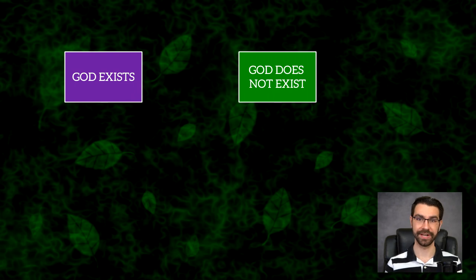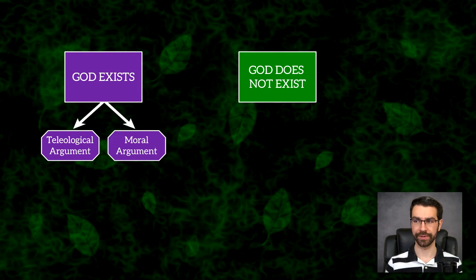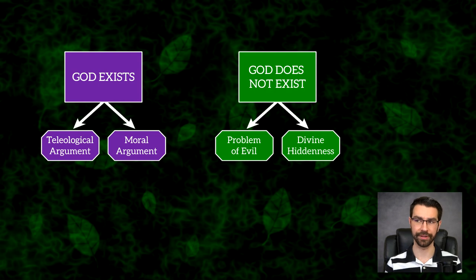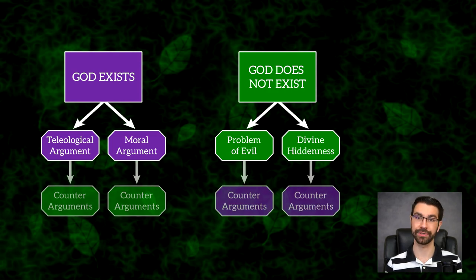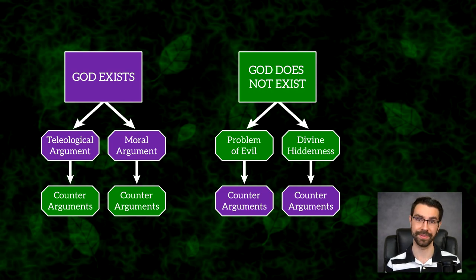As far as the arguments go, this binary distinction makes perfect sense. Arguments for the proposition that God exists might include the teleological argument and the moral argument, whereas arguments for the counter-proposition that God does not exist might include the problem of evil and the problem of divine hiddenness. Each of these arguments has its own daisy chain of counter-arguments, but fundamentally these are the two categories of arguments within the God debate. It is a binary system.